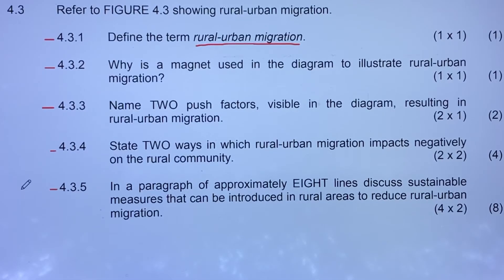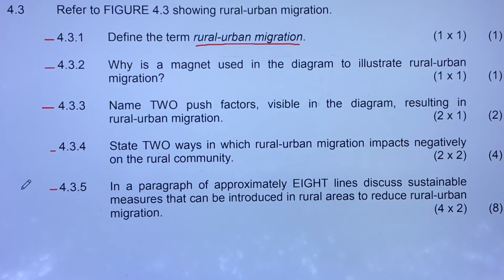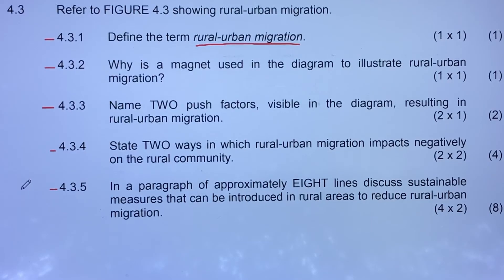Question 4.3.5 asks us to write a paragraph of approximately eight lines discussing sustainable measures that can be introduced in rural areas to reduce rural-urban migration. People are moving because of specific problems, so we need to discuss how we can prevent that movement.